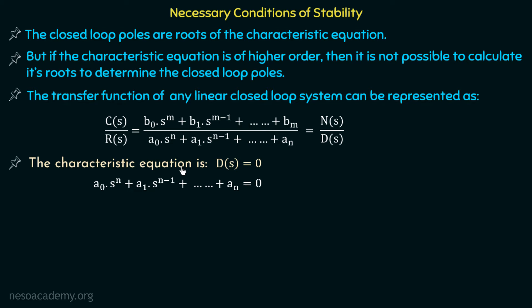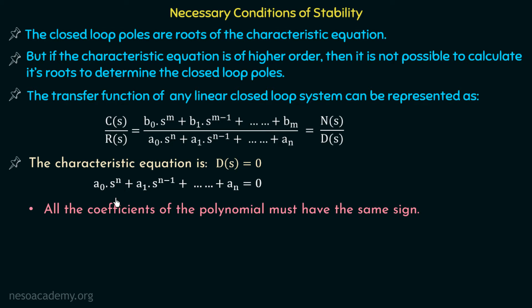RH criteria gives us the necessary and sufficient conditions that the characteristic equation must follow in order to be a stable system. We will first discuss the necessary conditions that this characteristic equation must satisfy for the system to be stable.